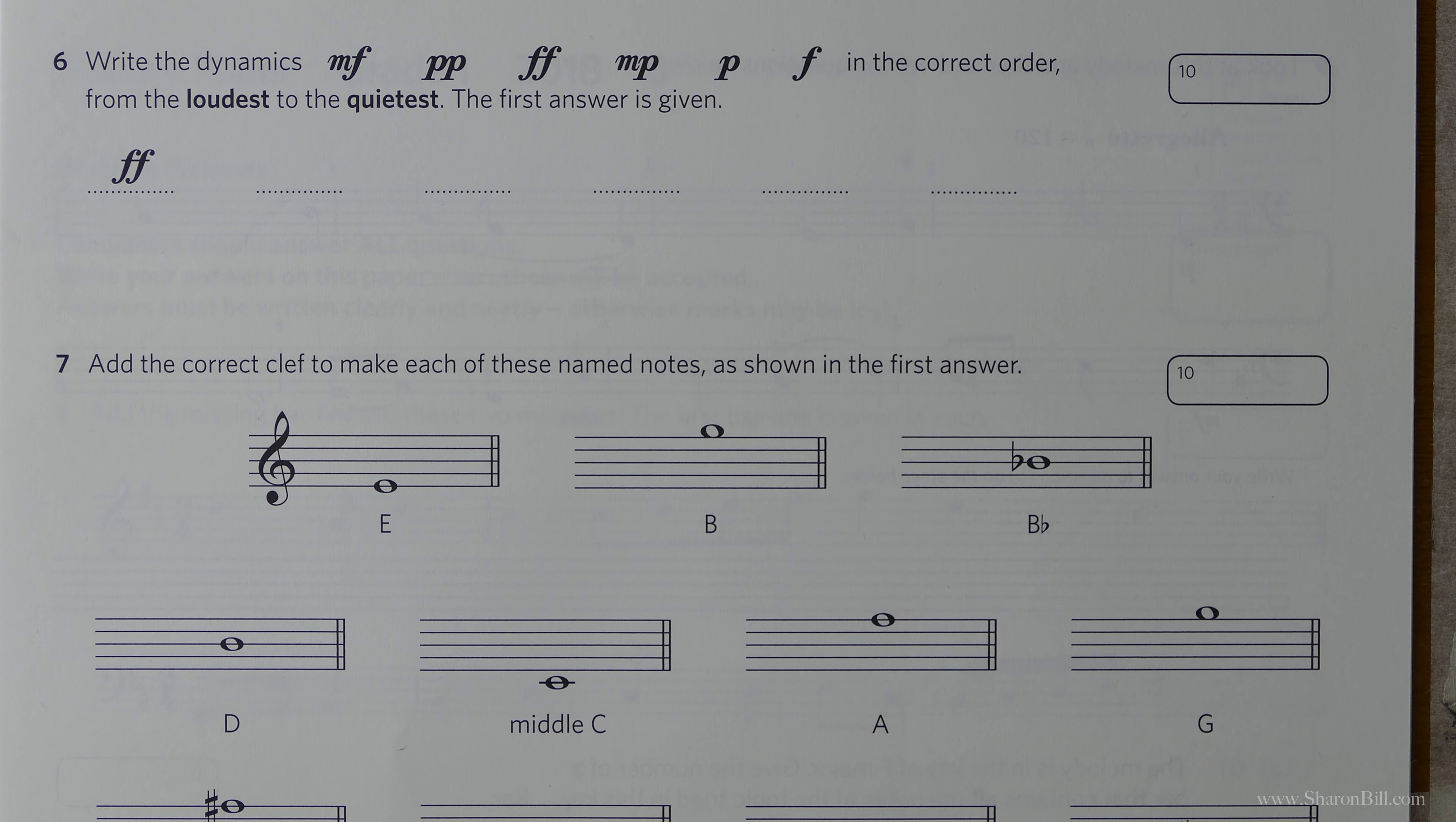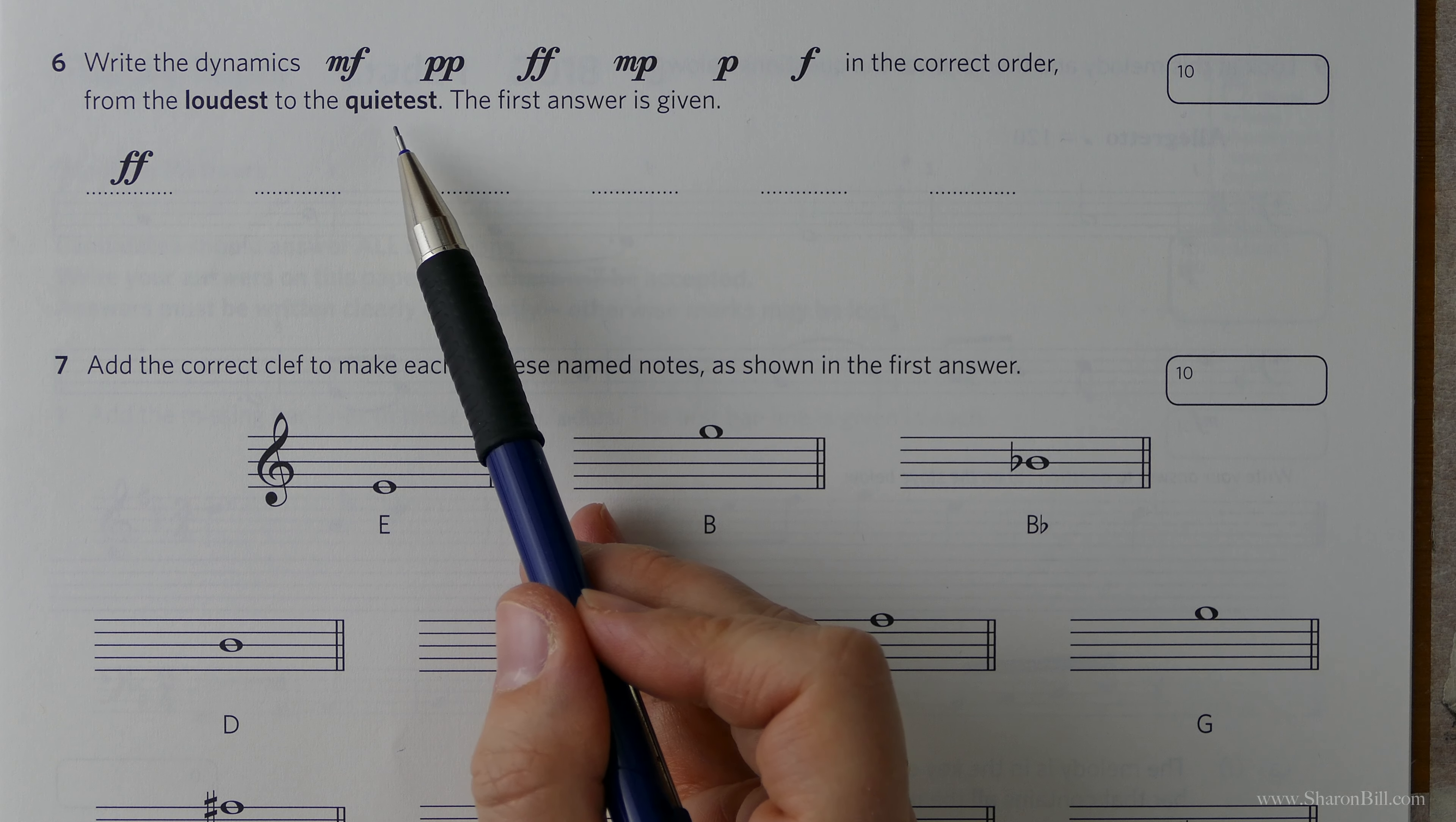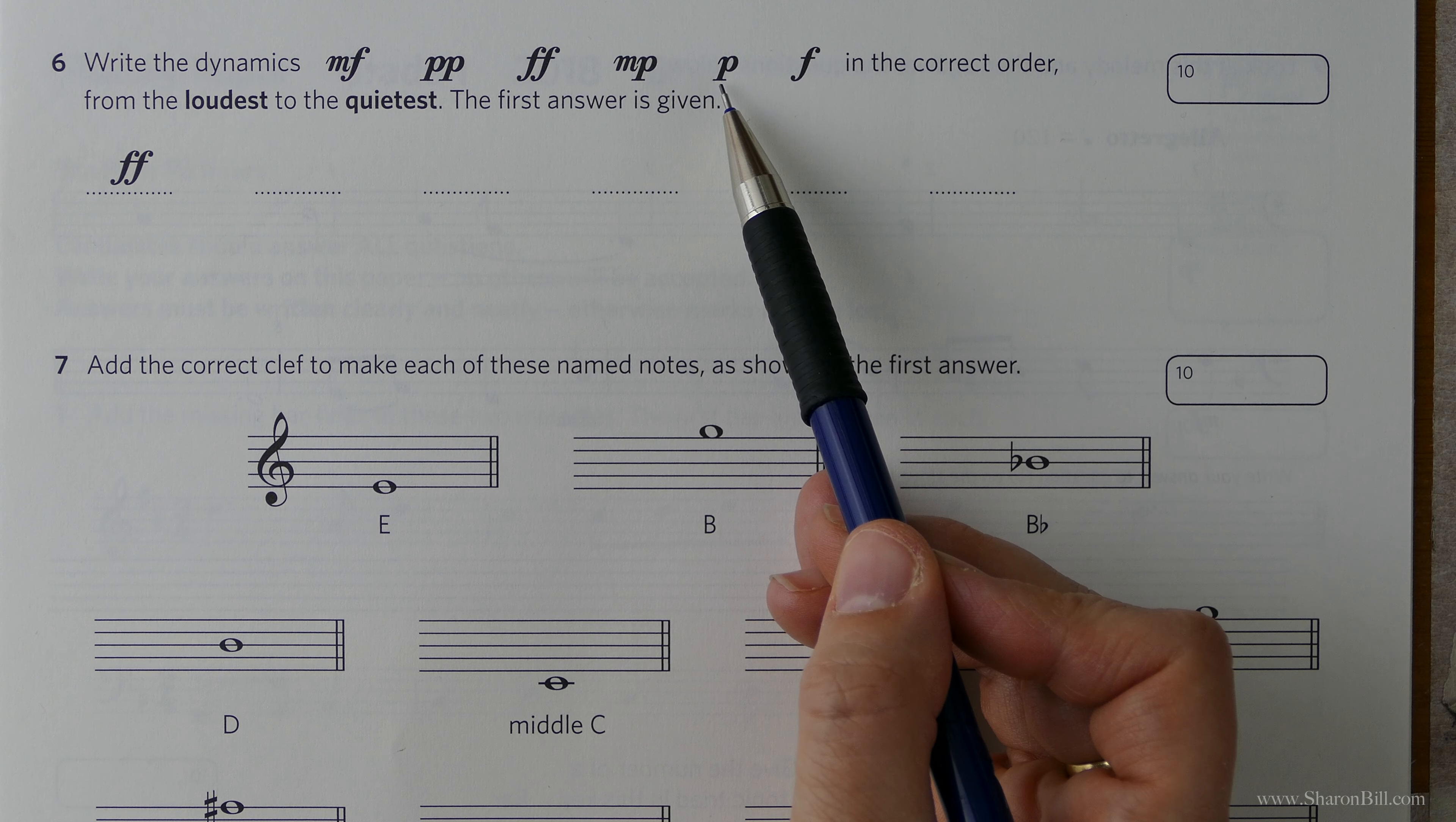So we have some dynamic symbols here and we need to rearrange them so that they are from the loudest to the quietest. If you remember, F is forte which is loud, P is piano which is quiet.